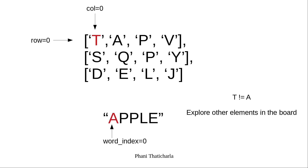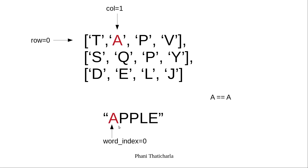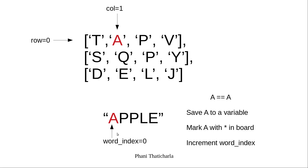Now let's move to the next letter. We are at row 0 and column 1 in the board. Is letter A in the board equal to letter A in the word? This is true. So we will do a depth-first search starting from this letter and check with all the letters in the word. First, we will save this letter to a temporary variable, then mark this letter so that we don't revisit it during DFS — we'll mark it with a star. Then we will increment the word index to check the next letter.